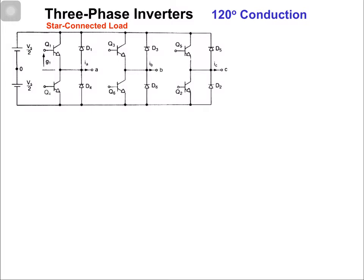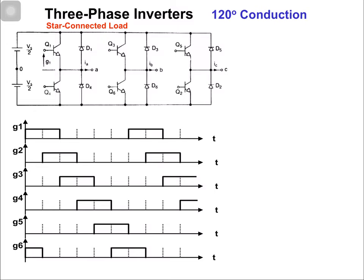Looking at the gate signals for 120 degree conduction, the width of each gate signal is reduced. For 180 degrees, the gate signal lasted for half the time period. For 120 degrees, the gate pulse is applied for 120 degrees and off for 240 degrees, then repeated. This is one complete cycle.